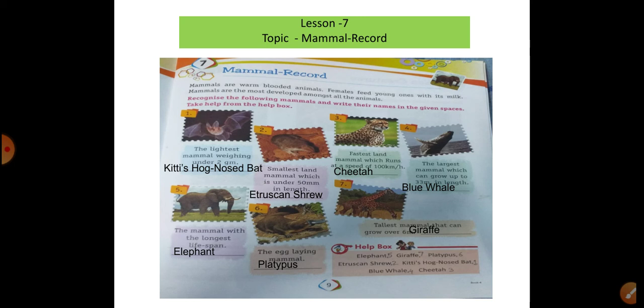Lesson number 7 topic: mammal records. Recognize the following mammals and write down their names from the helping list. First picture is a bat — Kitti's hog-nosed bat. Second is a Etruscan shrew. Third picture is cheetah. Fourth picture name is blue whale. Fifth picture is elephant. Sixth picture is platypus. Seventh picture is giraffe. Write down as given from the helping list carefully.